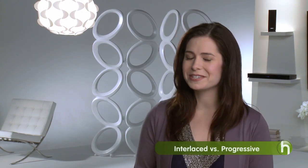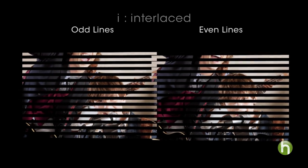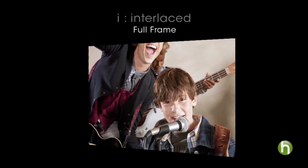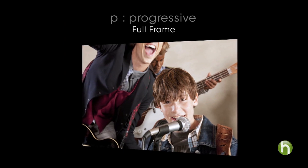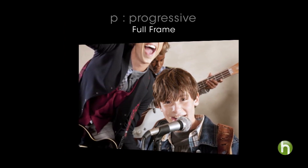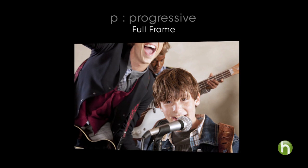What about this I versus P that you've heard of? Simply, it refers to the way the TV scans those lines of resolution. I stands for interlaced, which means the TV displays the image on the screen by alternating lines. P, or progressive, displays all the lines of the picture all at once, making it the superior picture quality.